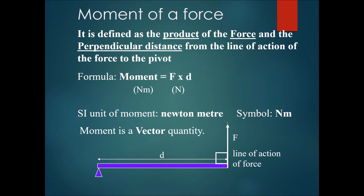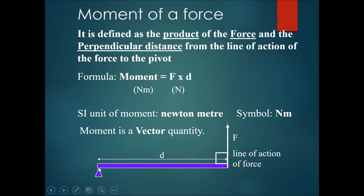A moment of force is defined as the product of the force and the perpendicular distance from the line of action of the force to the pivot. The formula is simple: moment equals force times distance. Looking at this picture, imagine this triangle as the pivot point — the place where it turns — and imagine this to be a door that can turn upward or downward about that pivot.